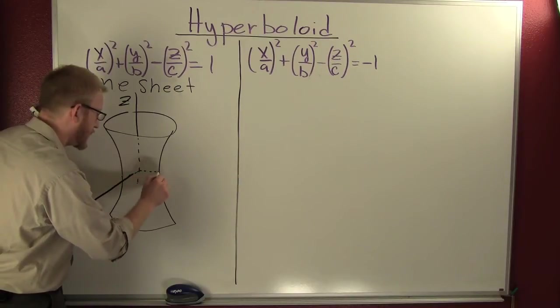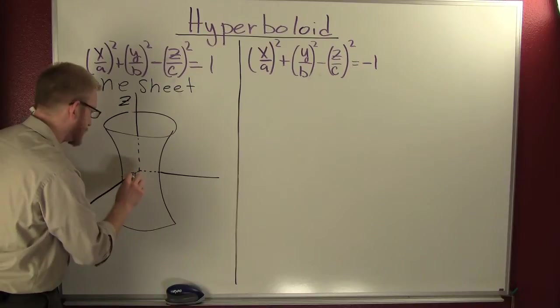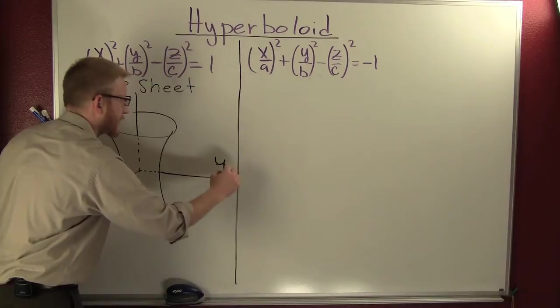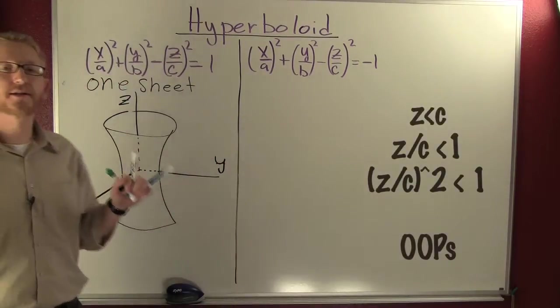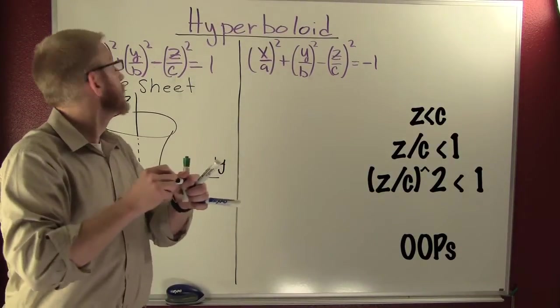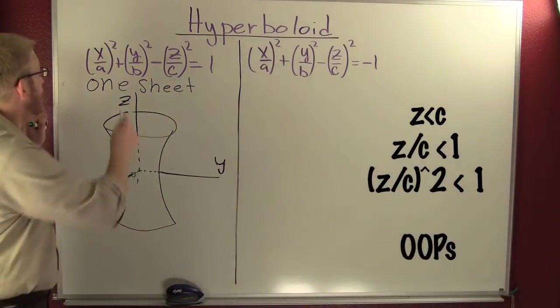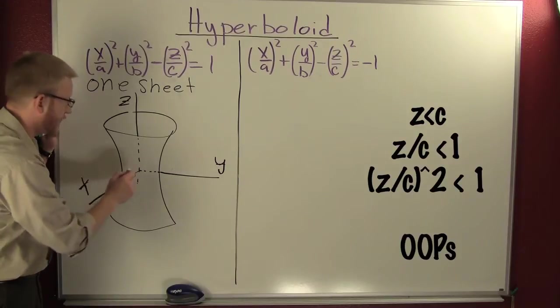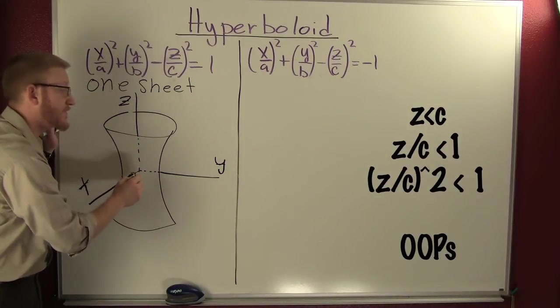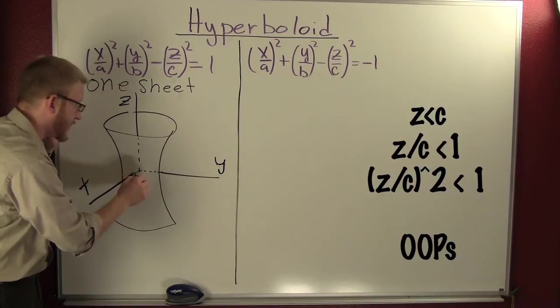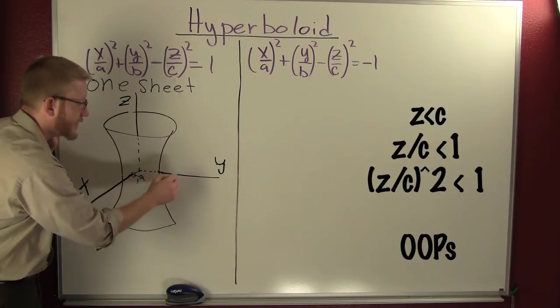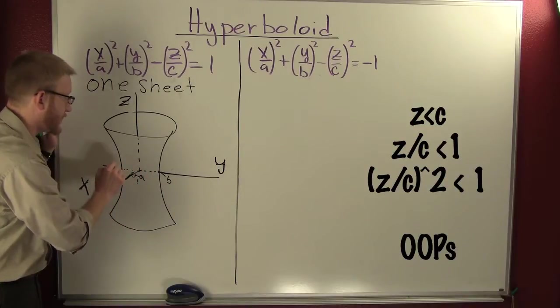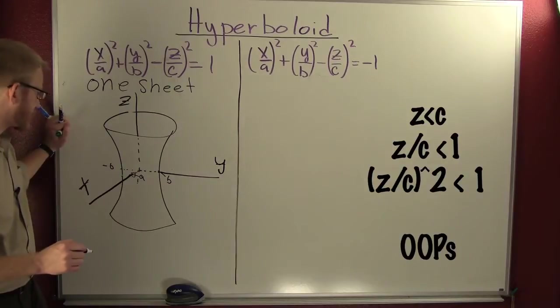And your Y is going out to the right. Alright, so let's look at the labelings of this hyperboloid. Here A is going to be where the X axis intercepts your hyperboloid in the XY plane, so this out here that's A. This over here is B, so similarly this over here is minus B.